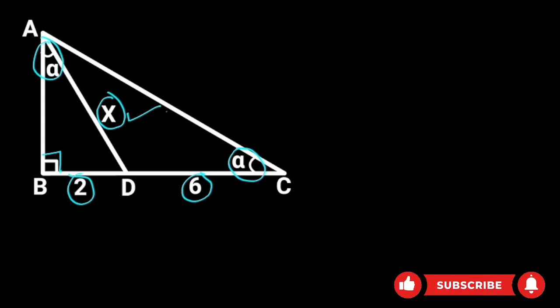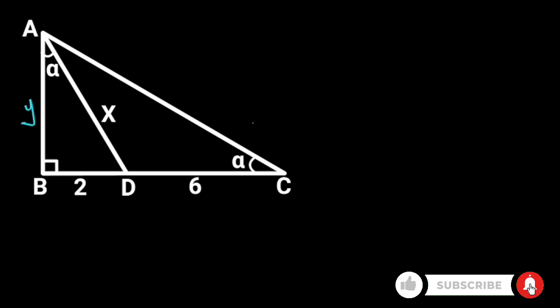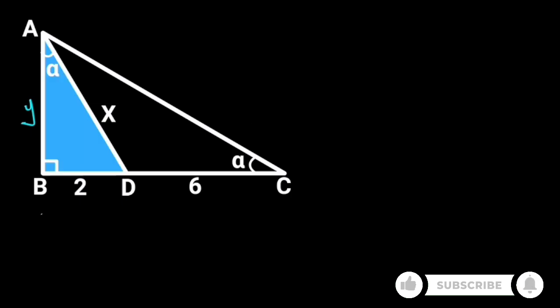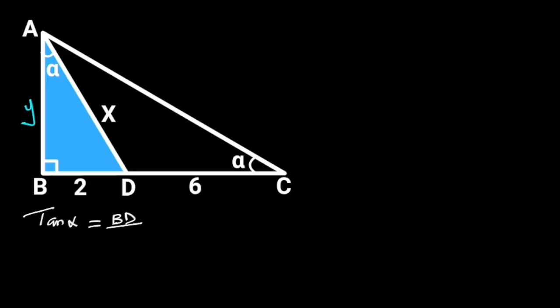To solve this problem, first, let AB be Y. Next, let's focus on triangle ABD. Triangle ABD is a right triangle. From trigonometric ratios, tan alpha is equal to BD over AB.